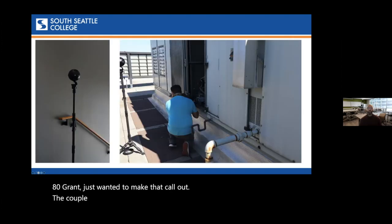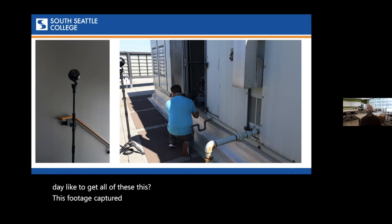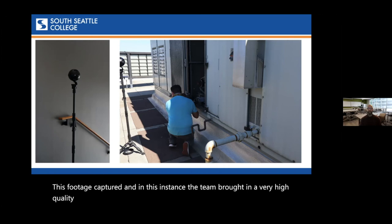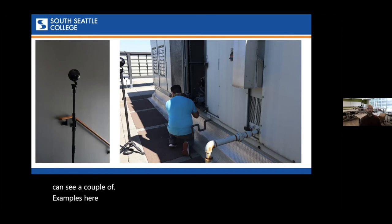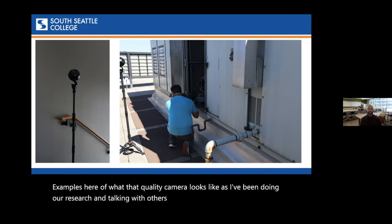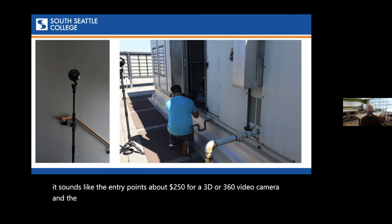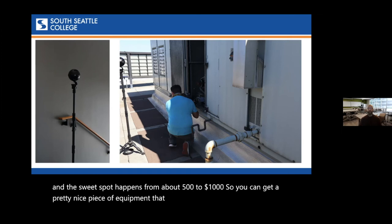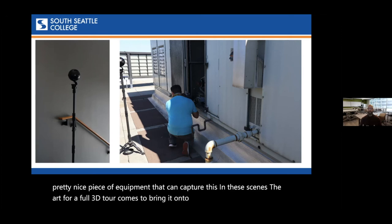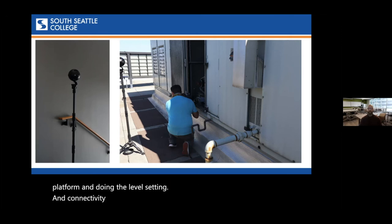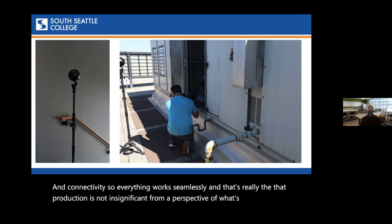The last slides show what the day looked like to get all of this footage captured. In this instance, the team brought in a very high quality camera to get these shots inside and outside the space. As I've been doing research and talking with others doing this kind of production, it sounds like the entry point is about $250 for a 3D or 360 video camera, and the sweet spot is from about $500 to $1,000. You can get a pretty nice piece of equipment that can capture these scenes. The art for a full 3D tour comes in bringing it onto an individual platform and doing the level setting and connectivity so everything works seamlessly — and that production is not insignificant from the perspective of what's accessible by a normal faculty team.